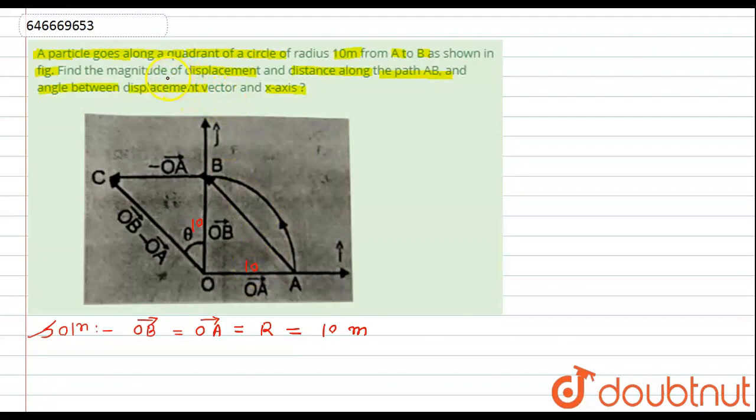According to the question, we have to find the magnitude of displacement along the path AB. If we see here this angle is 90 degrees. So by using Pythagorean theorem in right angle triangle, we can say that the displacement along AB will be equal to under root of OB square plus OA square, that is 10 square plus 10 square, which will be equals to 10 under root 2 meter.